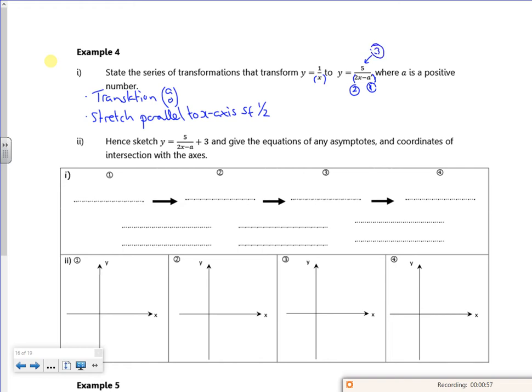Then I've got a random five which, if you think I'm multiplying it, because it's like five lots of one over x minus a, so because it's five lots of that, it's a stretch parallel to the y-axis scale factor five.